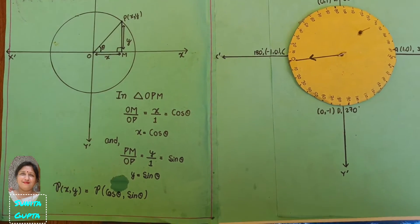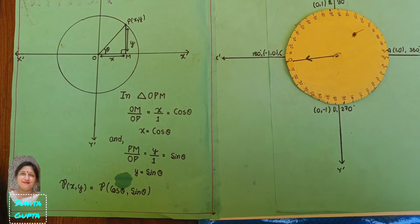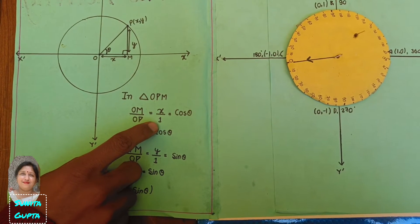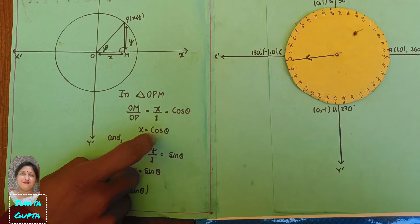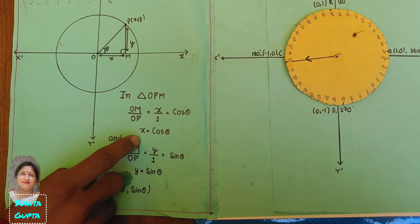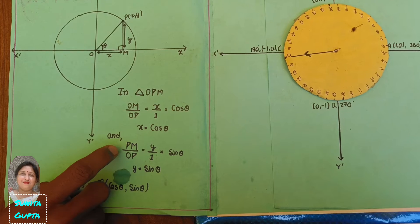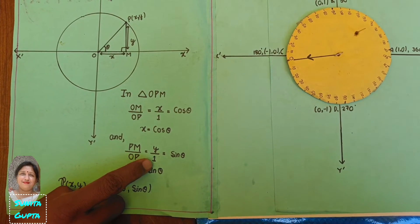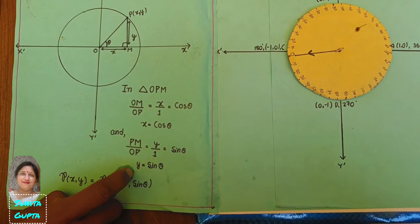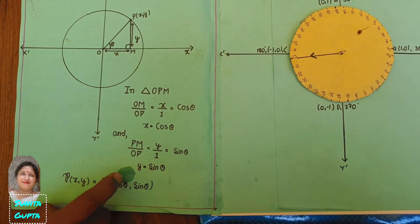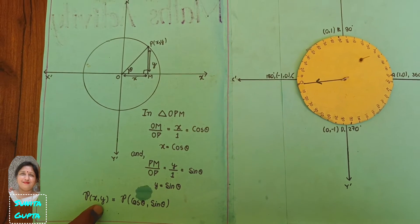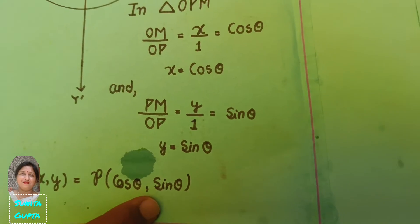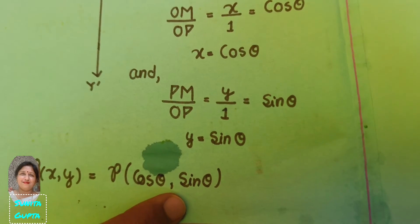By this triangle we measure the sine and cosine functions. OM upon OP equals x upon 1, which equals x, equals cos theta — meaning x represents the values of cos theta. Also, PM upon OP equals y upon 1, which equals sin theta — meaning y represents the values of sin theta. So for point P(x, y), x represents cos theta and y represents sin theta.